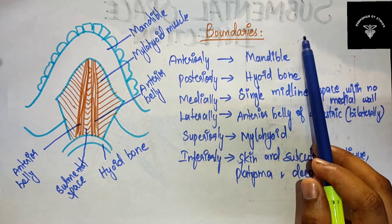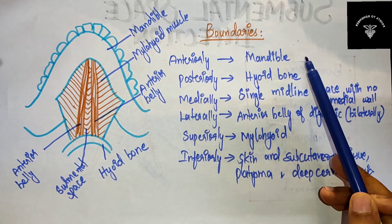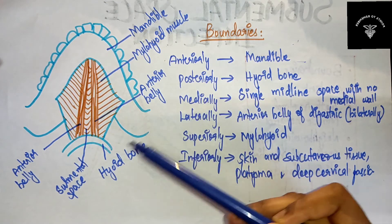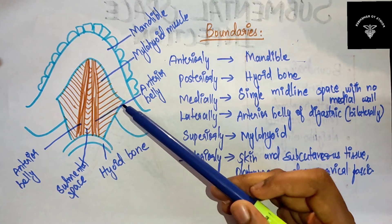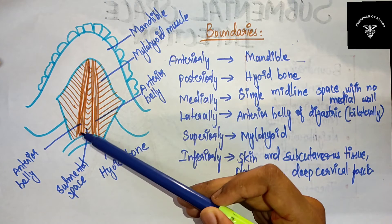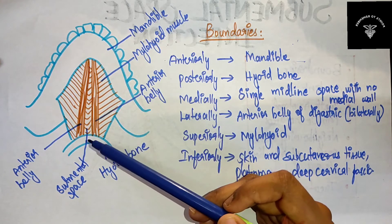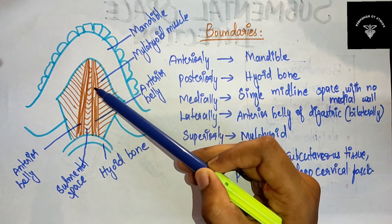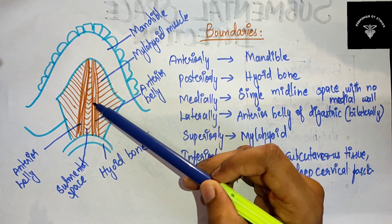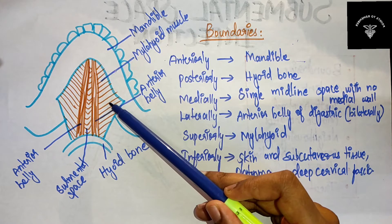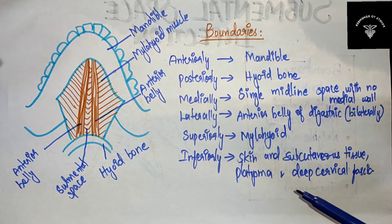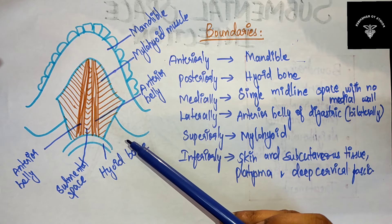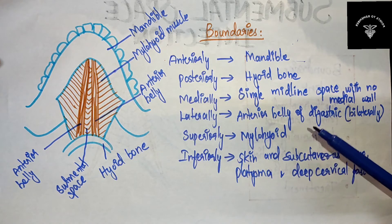To recap the boundaries: anteriorly — mandible; posteriorly — hyoid bone; medially — single midline space with no medial wall; laterally — anterior belly of digastric bilaterally; superiorly — mylohyoid muscle; inferiorly — skin, subcutaneous tissue, platysma, and deep cervical fascia. If you remember this diagram, you can write the boundaries easily.